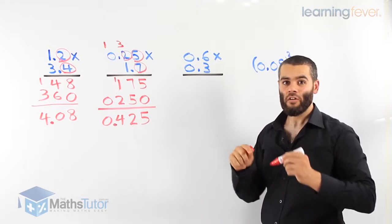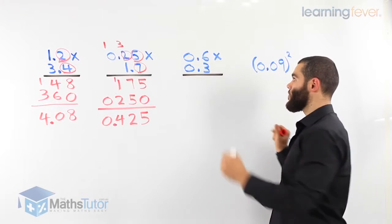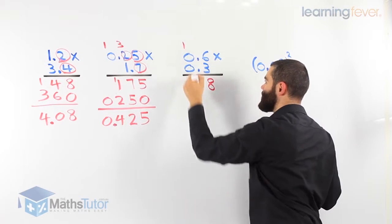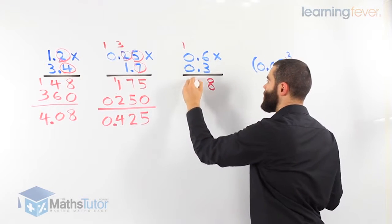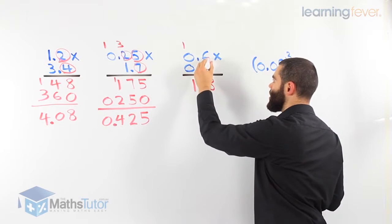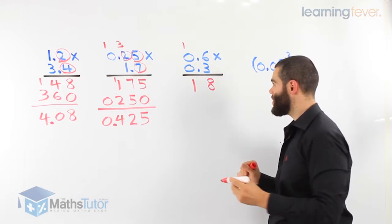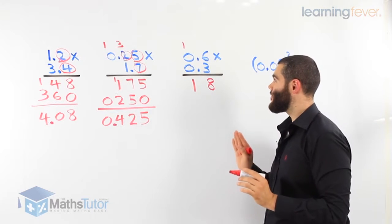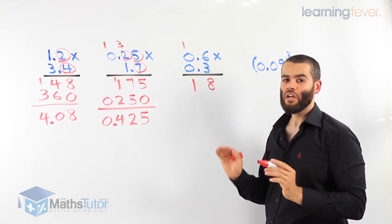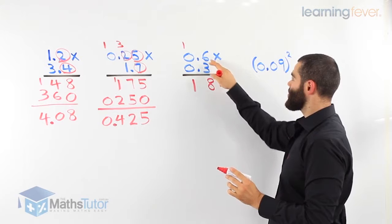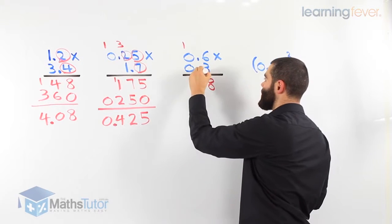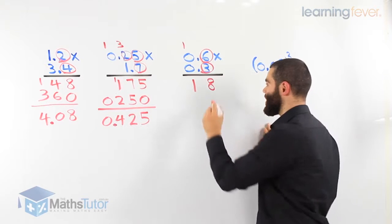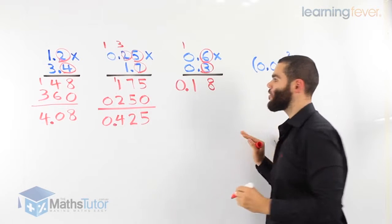We have 0.6 times 0.3. Follow with me — I'm pretty sure you've got the hang of it by now. We disregard the points and do our normal multiplication. 3 times 6 is 18. 3 times 0 is 0, plus the 1 is 1. So our answer is 18. However, we have decimal points, so we need the same decimal places in the answer. There is one decimal place in 0.6 and one in 0.3 — two decimal places in the question, so two decimal places in the answer: 0.18.